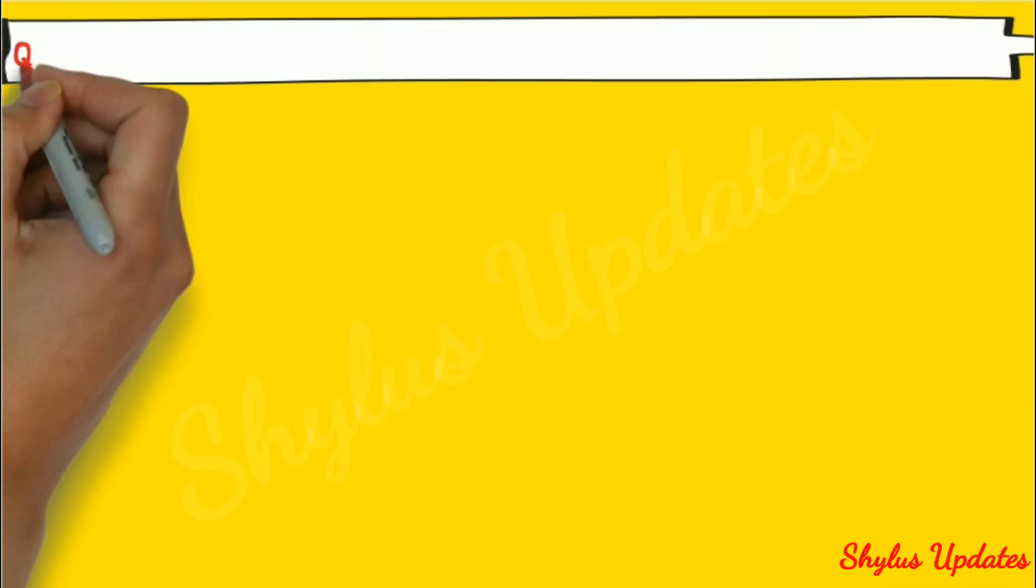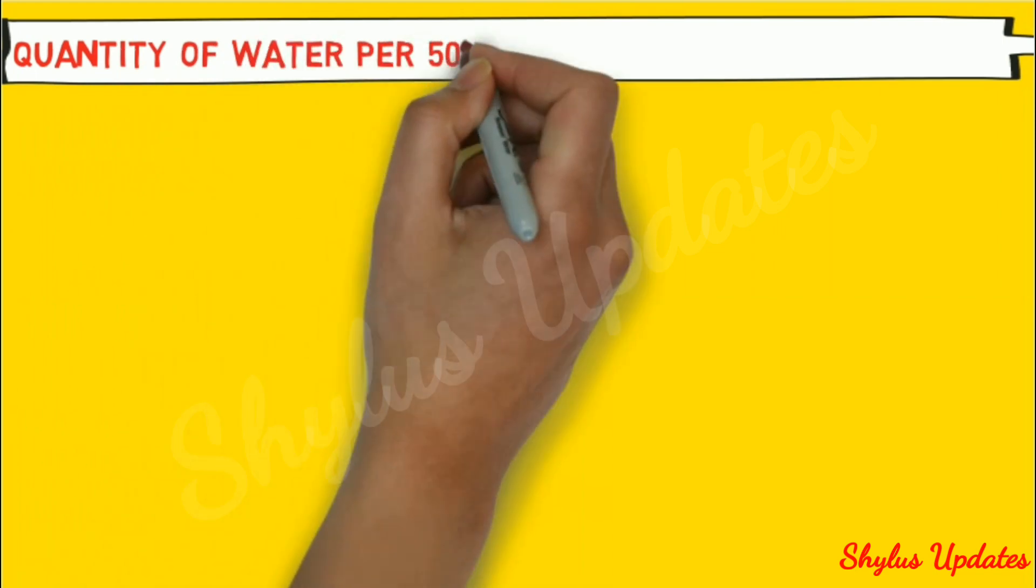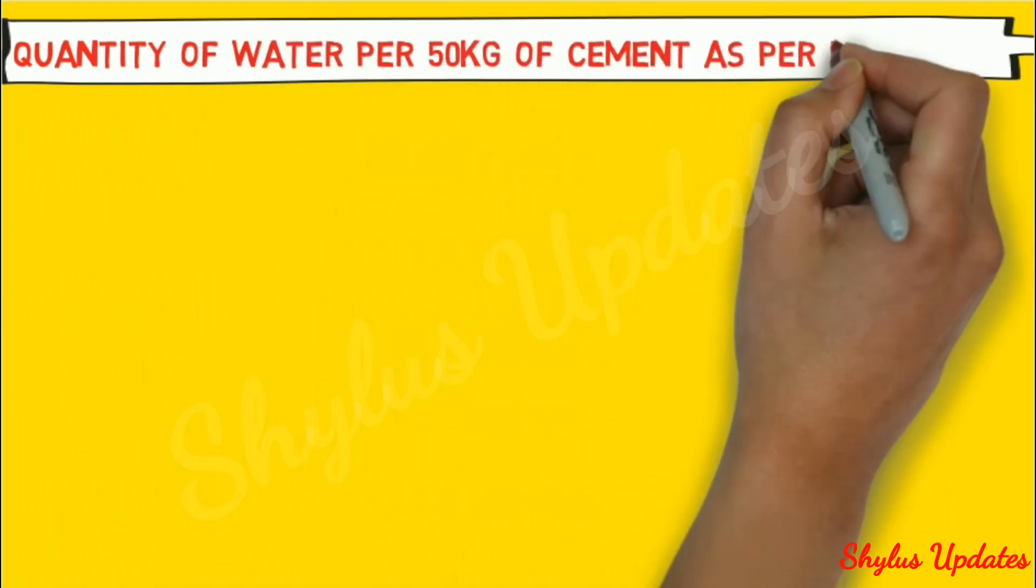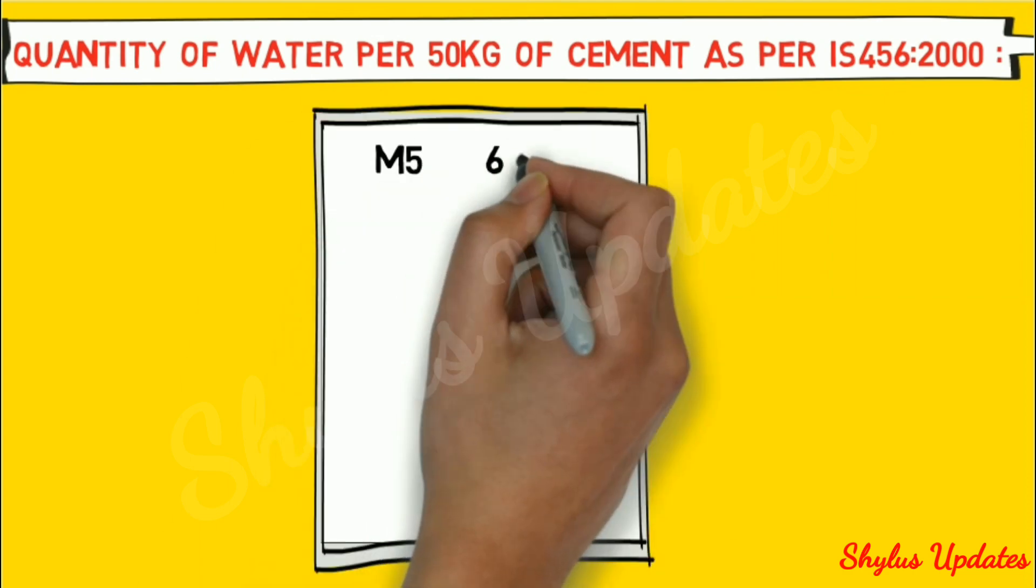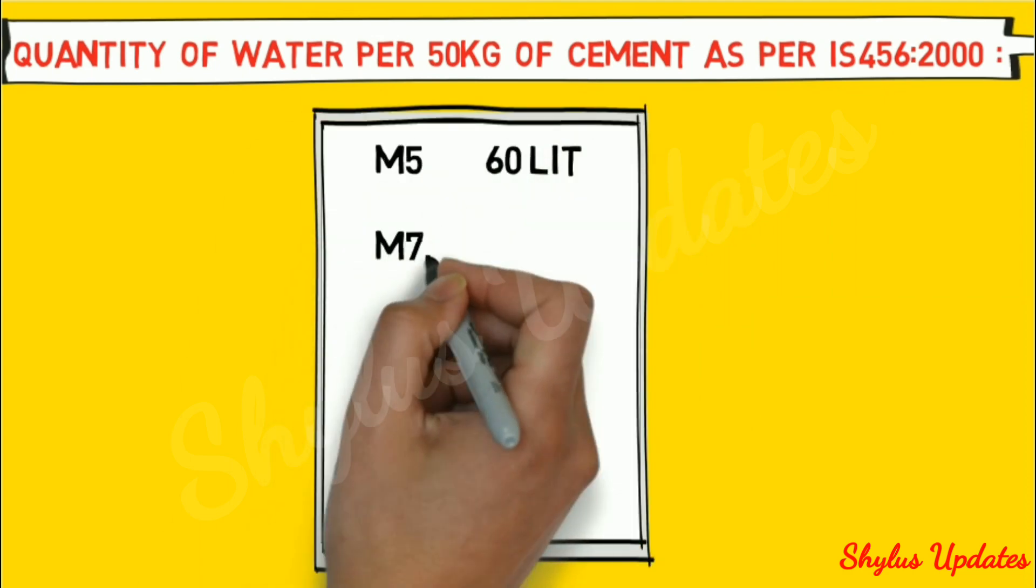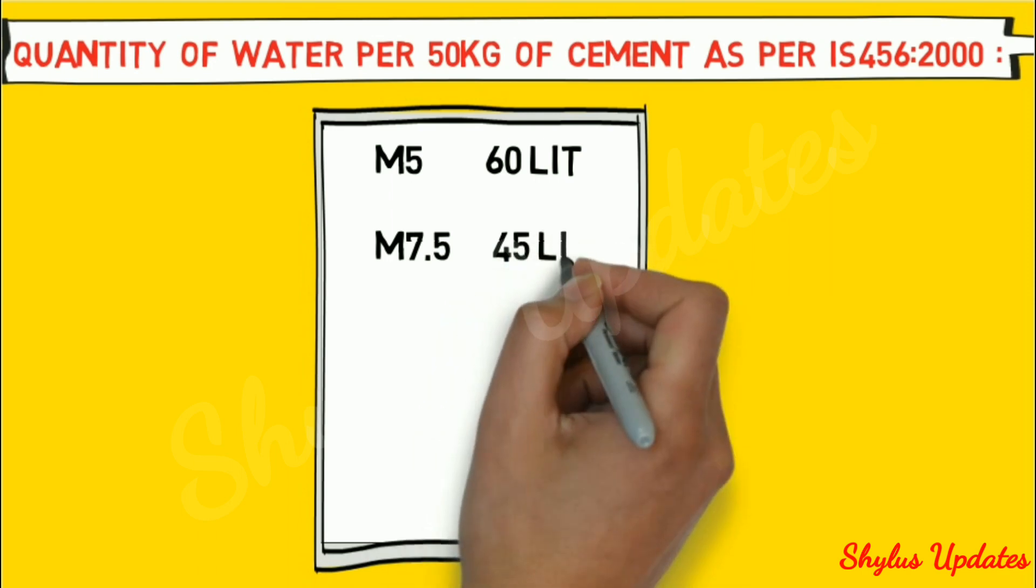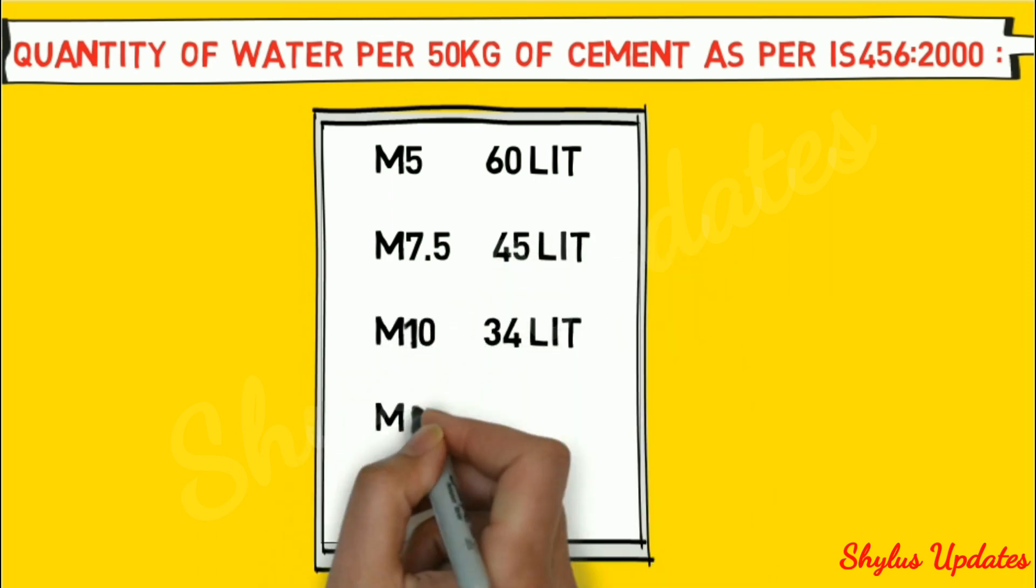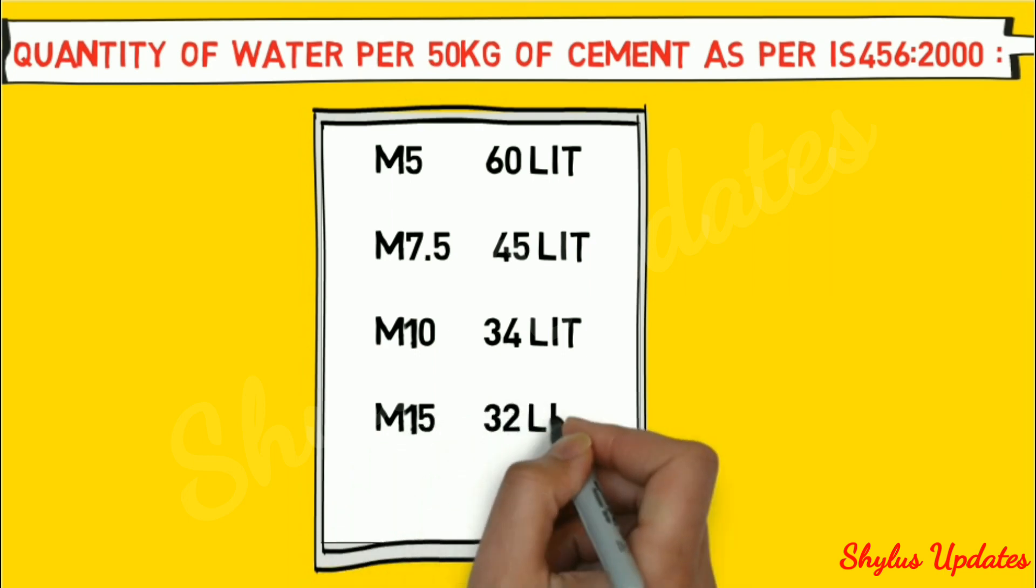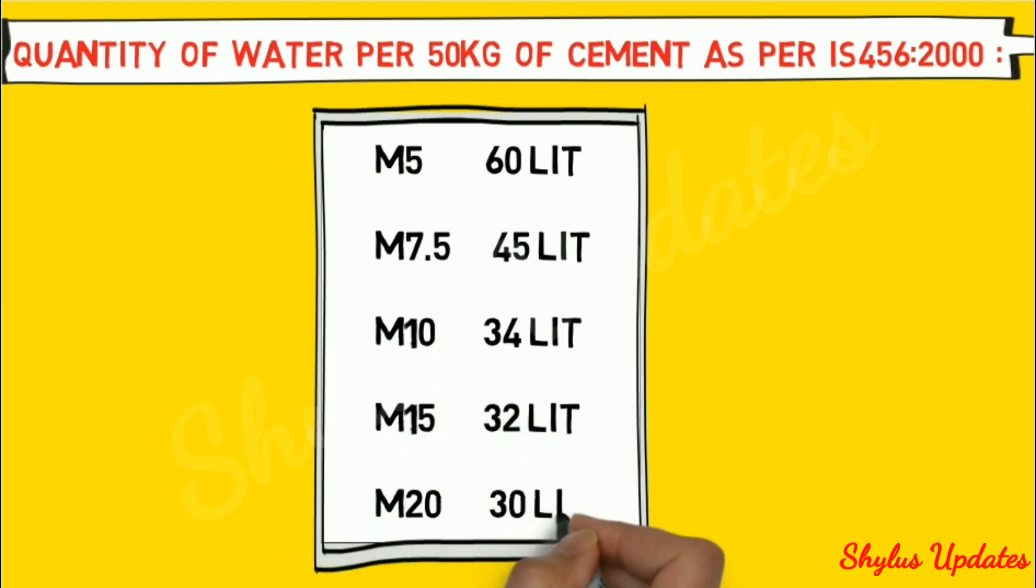Quantity of water per 50 kg of cement as per IS 456-2000: M5 60 litre, M7.5 45 litre, M10 34 litre, M15 32 litre, M20 30 litre.